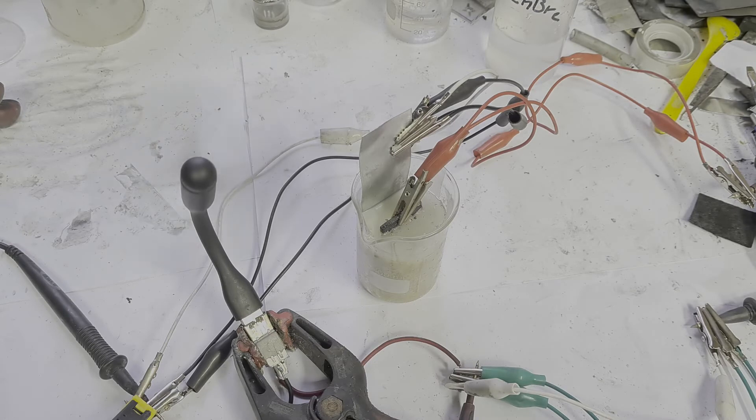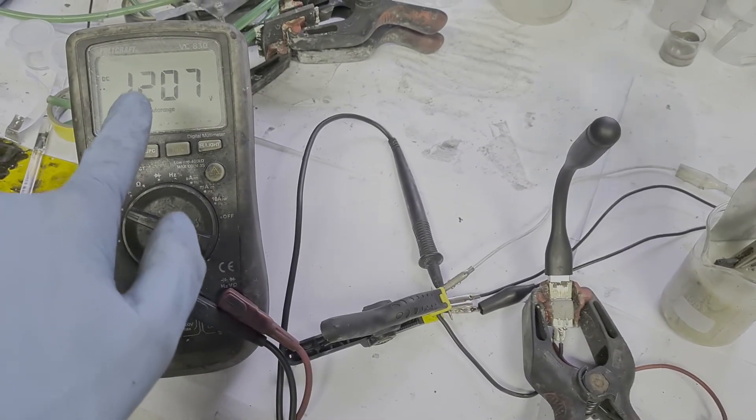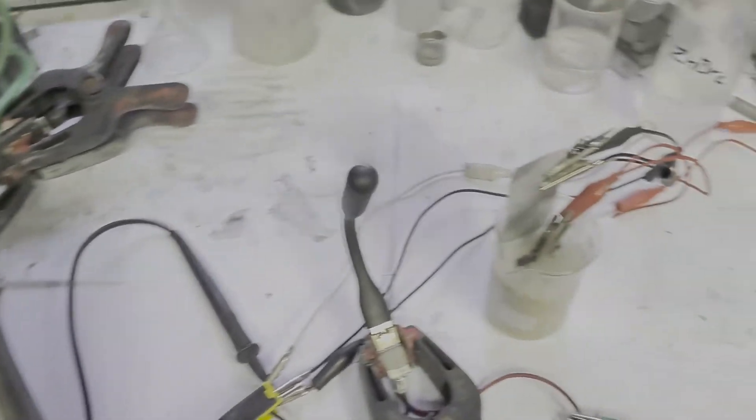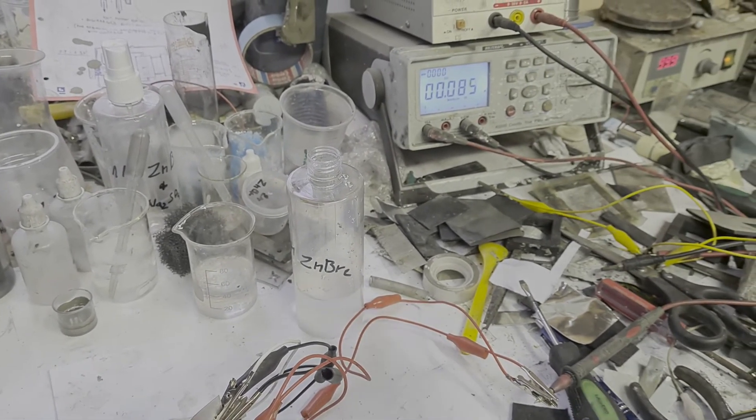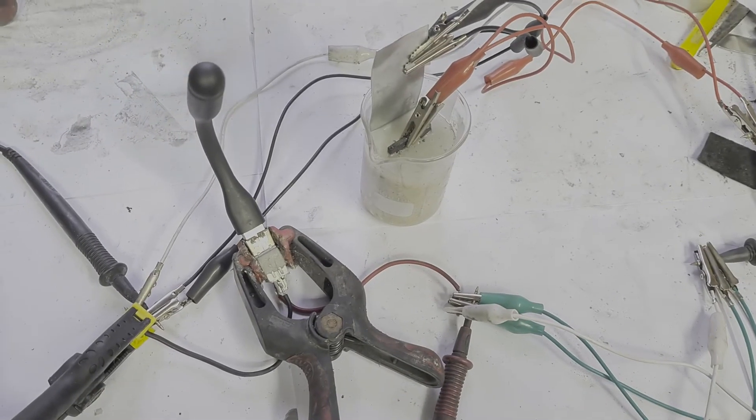And this is the discharging of this cell after one hour. And still I have 1.2 volts and the discharging current is 85 milliamp hours, which is really awesome.